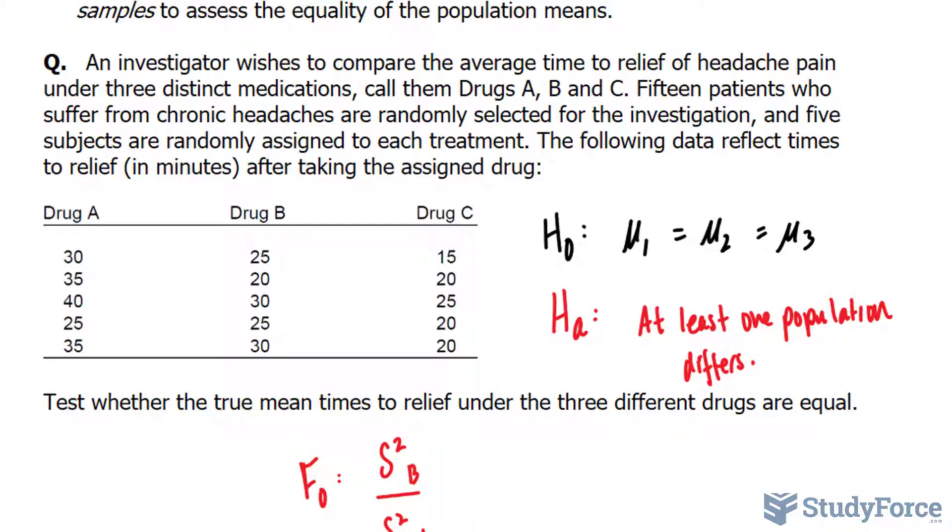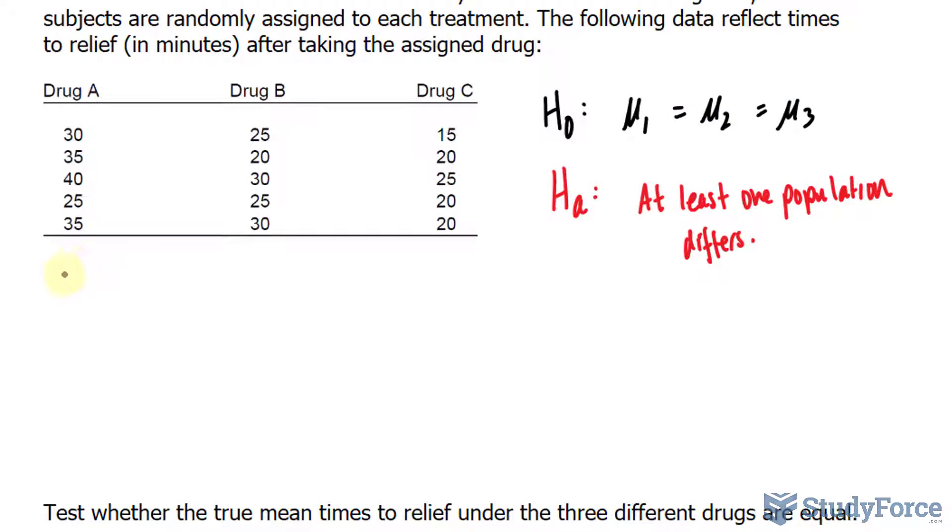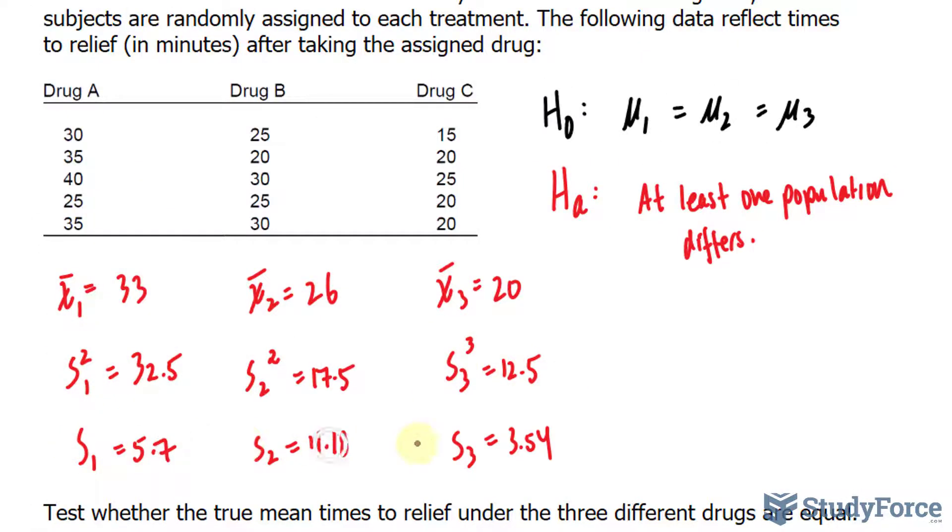and here are the values that you should have found had you done it correctly. The mean of this group should have been 33, and notice that I'm using x-bar as opposed to mu. When we're looking for the mean of a sample, we use x-bar, whereas mu represents the entire population. This is just a small sample. So again, the average of this group happens to be 26, and for this group, it is 20. The rest of the information should look like this. This row is the variance, and this is the standard deviation.